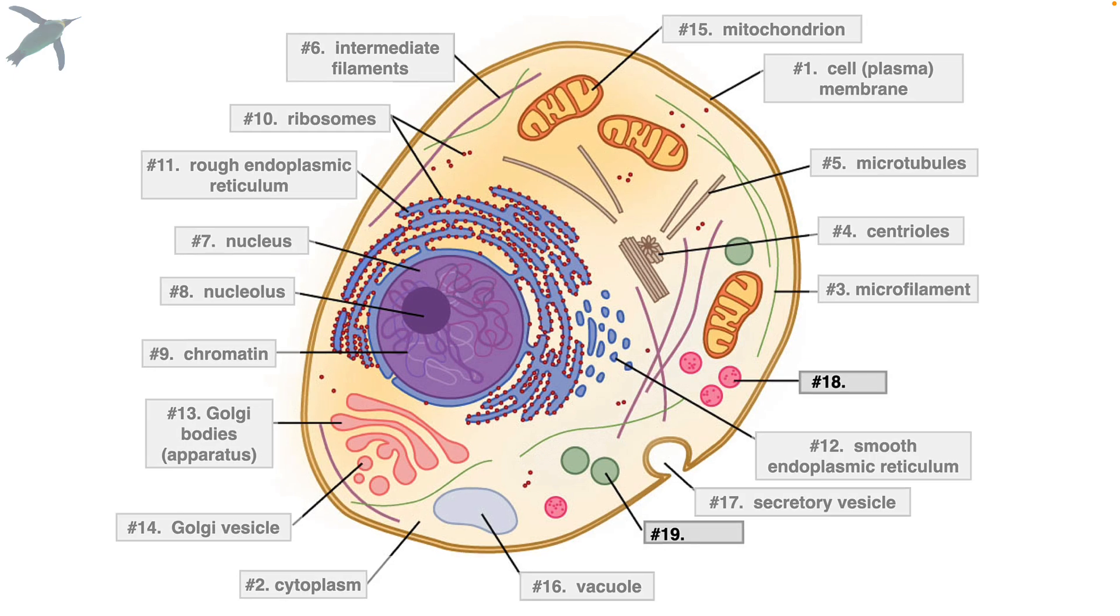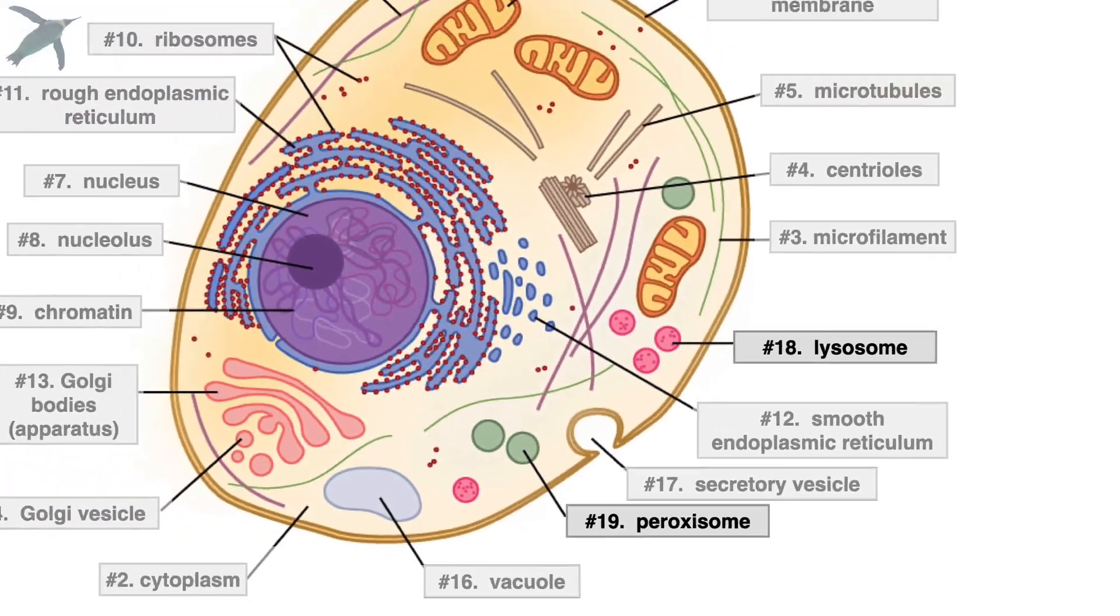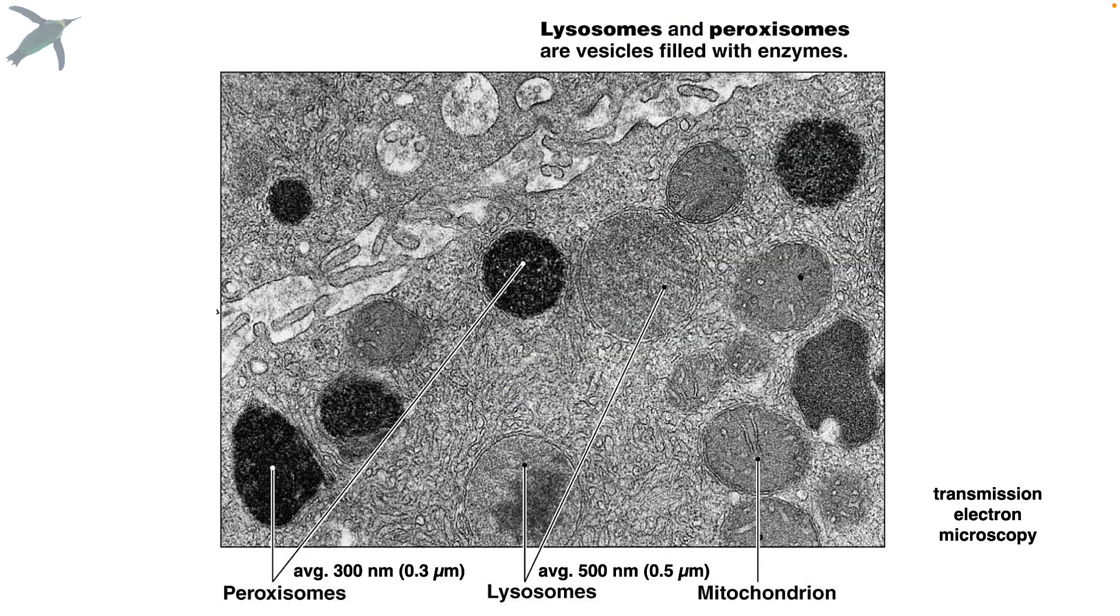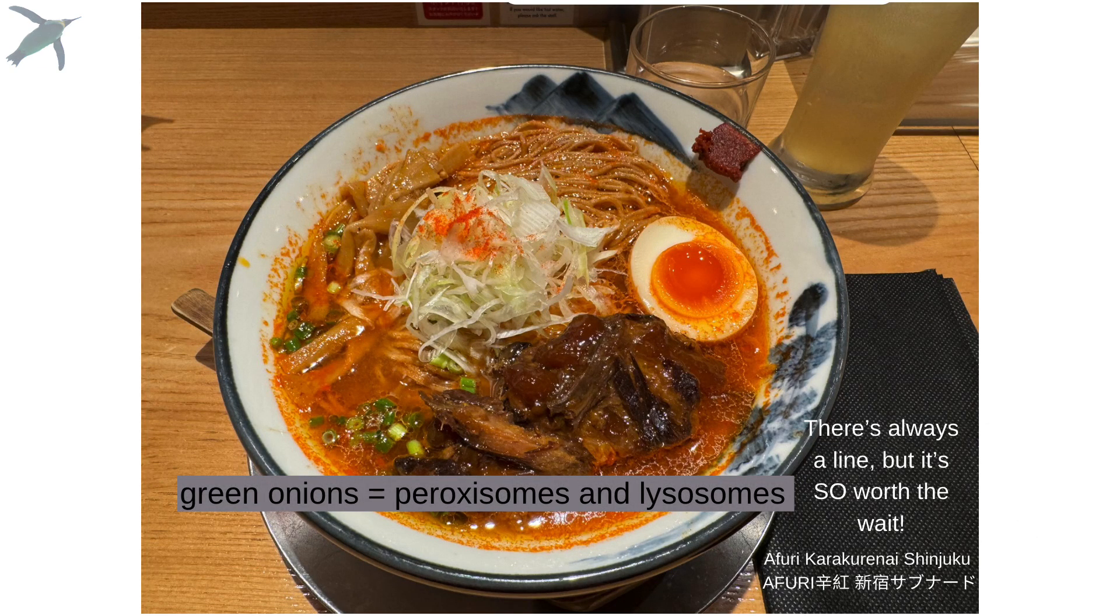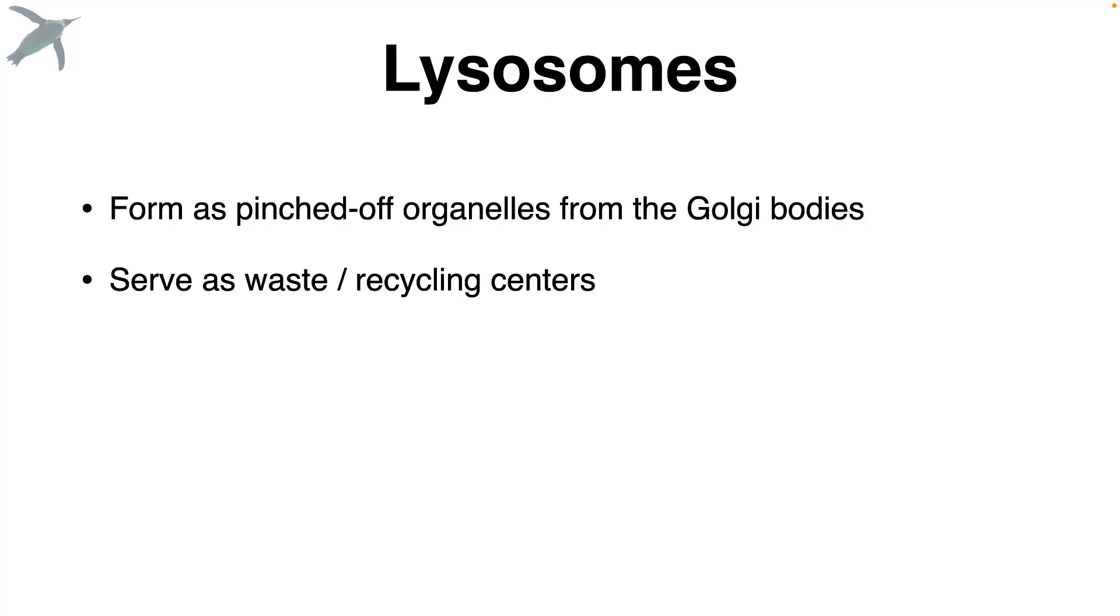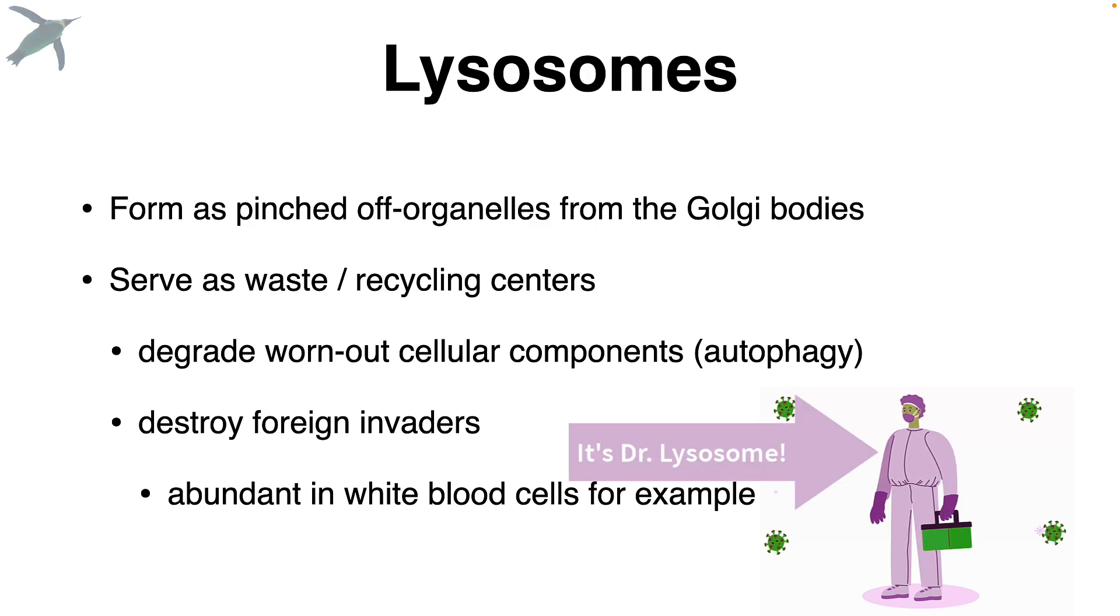We've just got to talk about waste and recycling. 18 and 19, we've got lysosomes and peroxysomes. They look very much the same, even under electron microscopy. And they are both organelles that are filled with enzymes, but they do slightly different things. So lysosomes form as pinched off organelles from the Golgi bodies. And they basically degrade worn out cellular parts. This is called autophagy, which means self-eating. They also destroy foreign invaders. So they're really abundant in white blood cells, for example, which are the key players in the immune response.